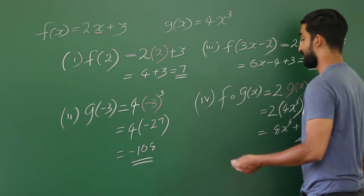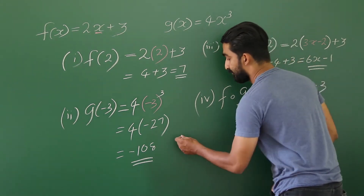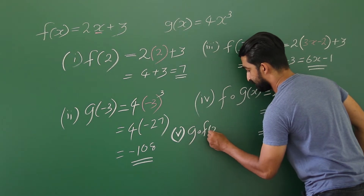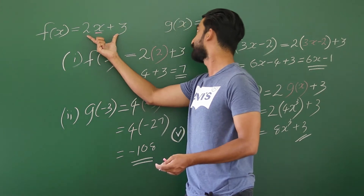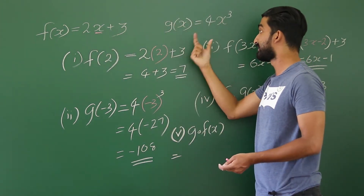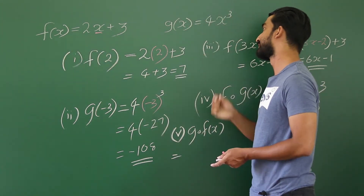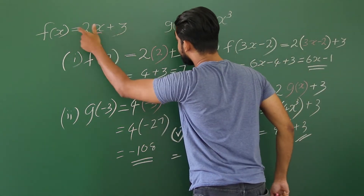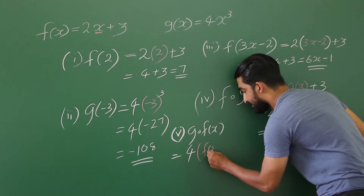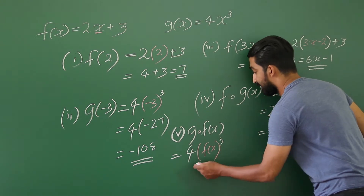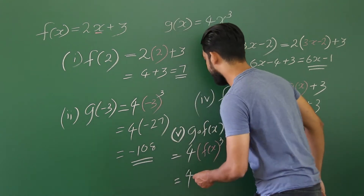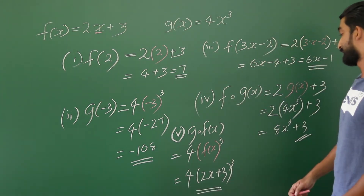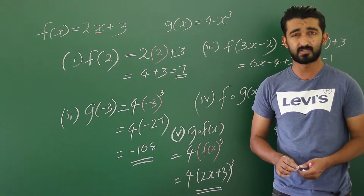Now we'll do one bonus example — Roman number 5. We found f∘g(x); now what about g∘f(x)? This means f(x) function has to be substituted for x in g(x). g(x) is 4x cubed, so instead of x we write f(x), which is 2x plus 3. So it is 4 times (2x plus 3) to the power 3. If you want, you can simplify; otherwise, you can keep the answer like this.